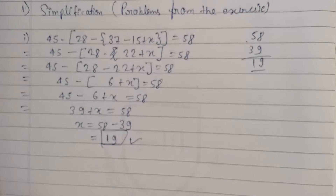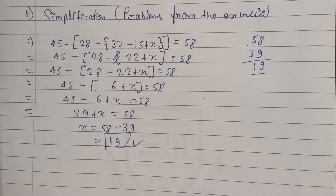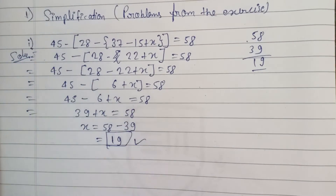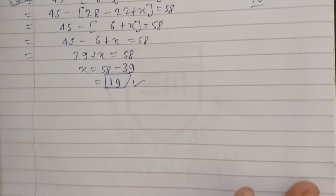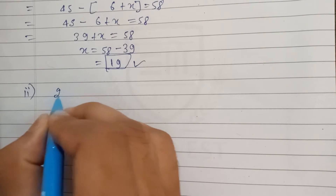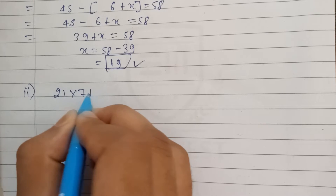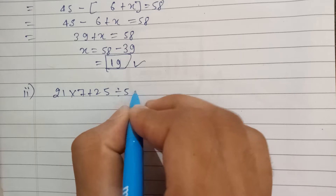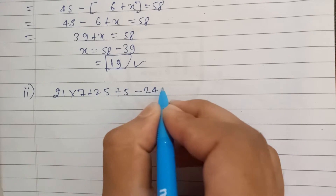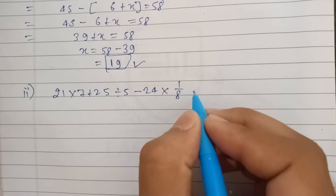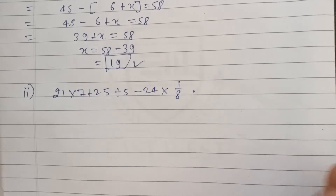See it once and practice it — this is very important for all types of government exams. Now we'll move on to our second question: 21 into 7 plus 25 divided by 5 minus 24 into 1 by 8.